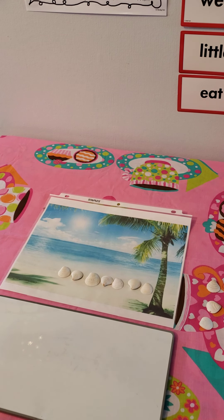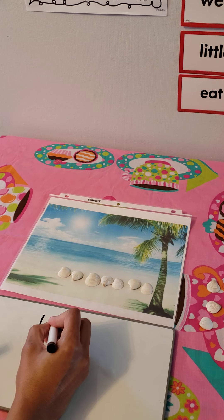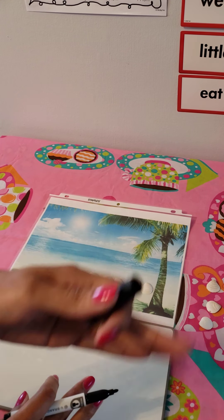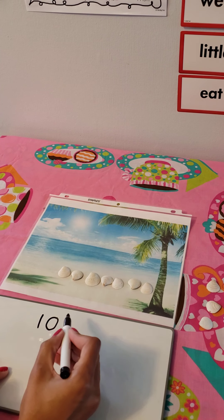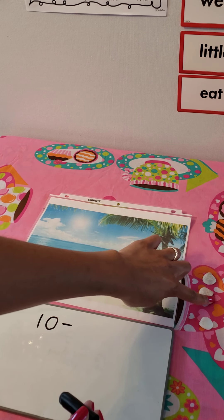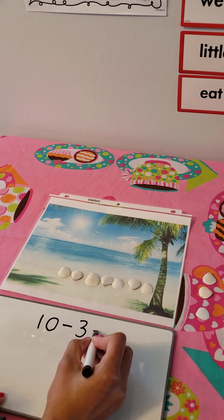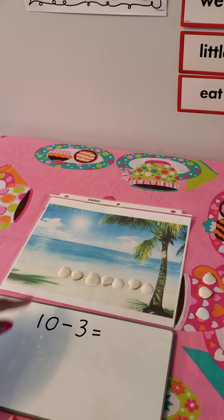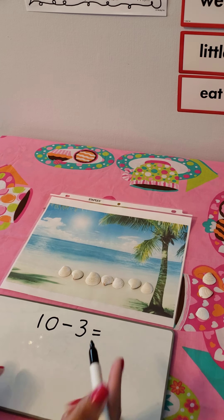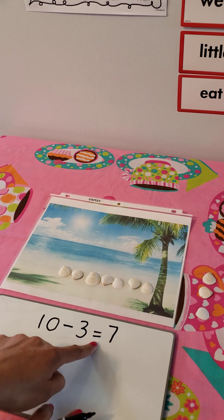What equation could we write? We always start with the number that we had first. The number we started with was ten, so let's write the number ten. Because they washed away, we subtracted — so we're going to use a minus sign. Ten minus how many were subtracted? One, two, three. Equals. We took away three and we have one, two, three, four, five, six, seven. Ten minus three equals seven.